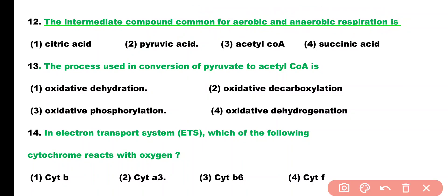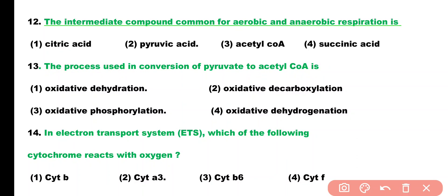Question number 13. The process used in conversion of pyruvate into acetyl coenzyme A is: oxidative dehydration, oxidative decarboxylation, oxidative phosphorylation, or oxidative dehydrogenation. Correct answer is option 2. The conversion of pyruvate into acetyl coenzyme A is known as pyruvate decarboxylation or oxidative decarboxylation.